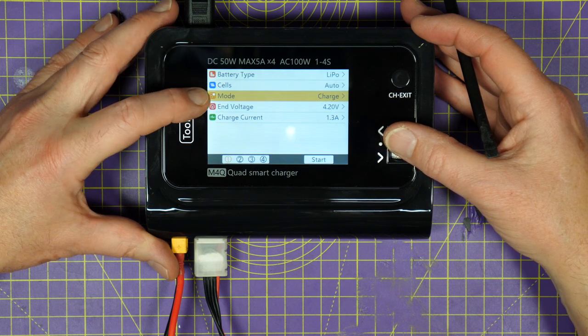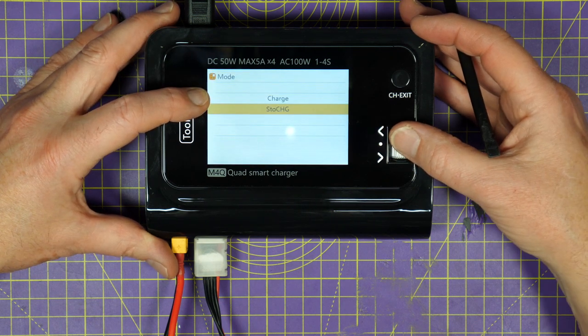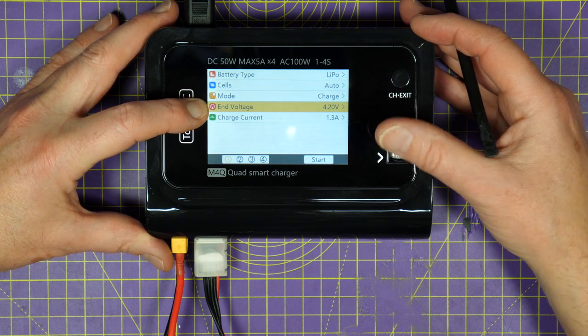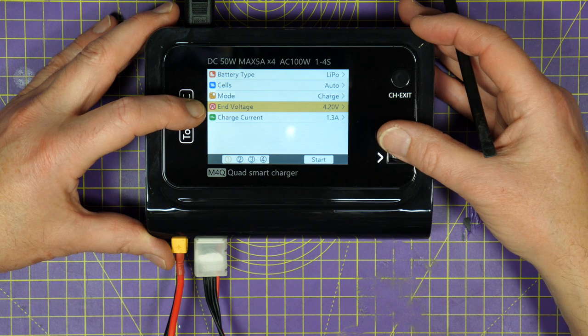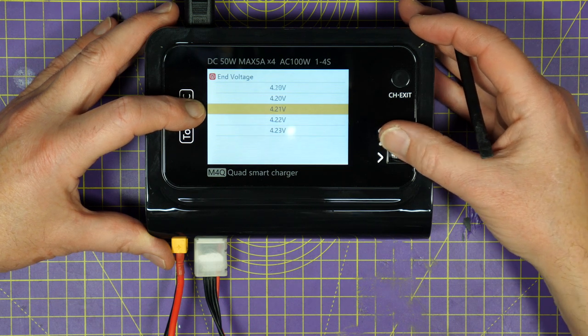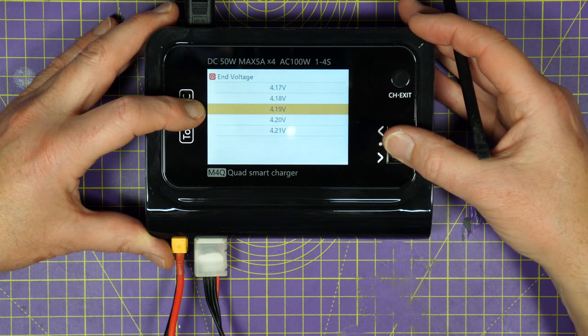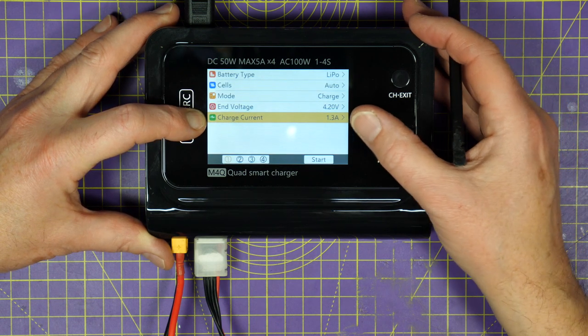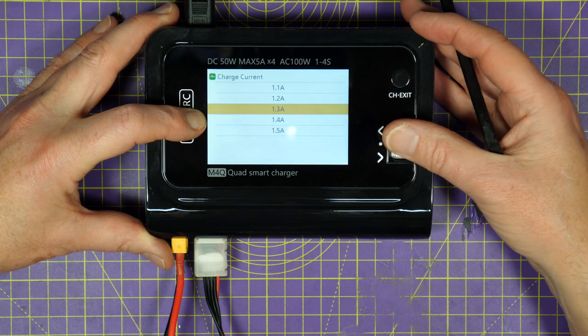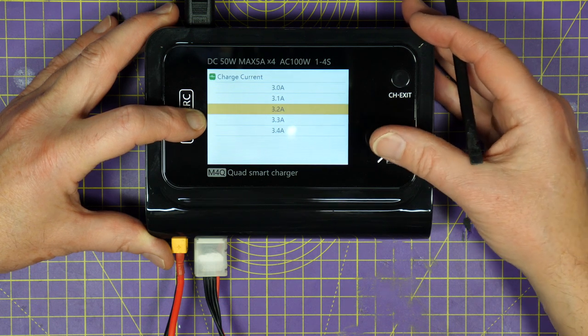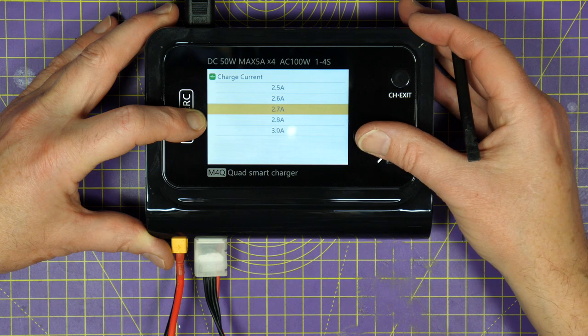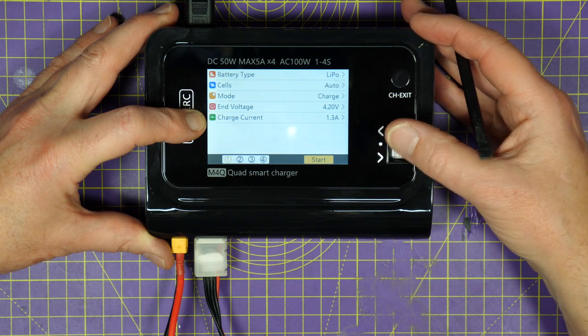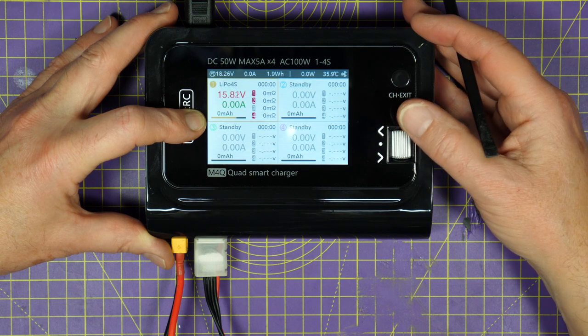You can choose the cell count or you can just leave it on auto and it'll figure it out for itself. The mode, you've got a choice of charge and storage charge, but we're going to charge this. The end voltage, I've set to 4.2, which is what you need for a LiPo, but if you select that, you can choose whatever you like. And then you can choose the charge current. I've got this set to 1.3 amps, but you can choose whatever you like and whatever is appropriate. So, we go back to 1.3. There we go. Start charging. Just select start and we're off.